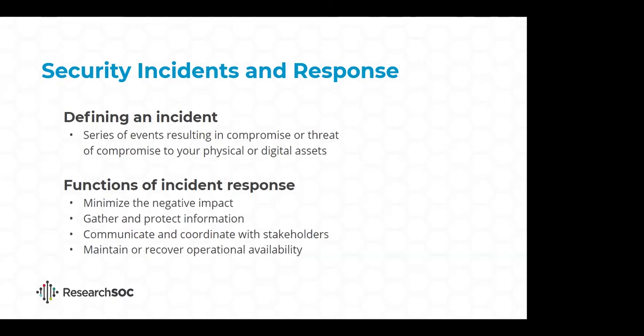A third function of incident response is communication — we want to effectively keep our personnel and internal and external stakeholders informed, as well as handle any mandated reporting to governing bodies or compliance organizations. This can also help manage reputation loss in high profile events. Finally, we want to maintain the operational availability of our systems, services, and infrastructure to our users and clients. Which of those gets prioritized depends largely on your own operational objectives.